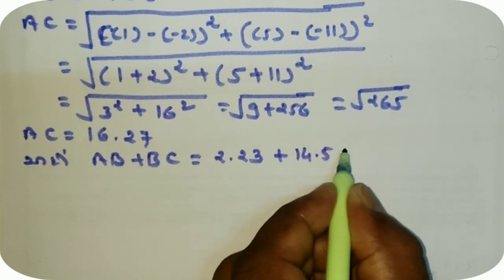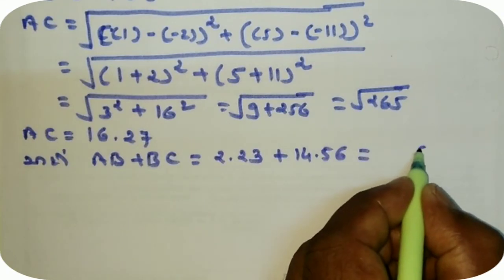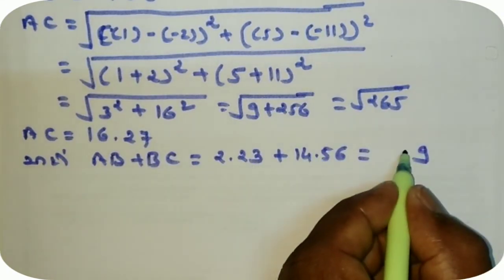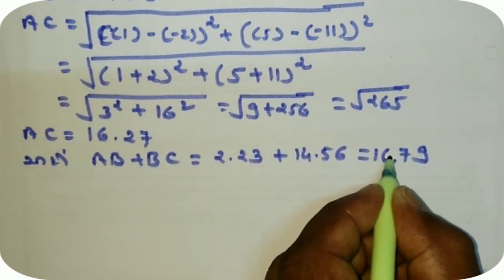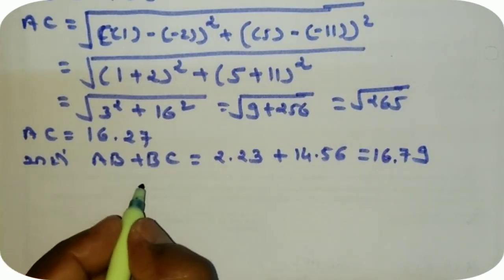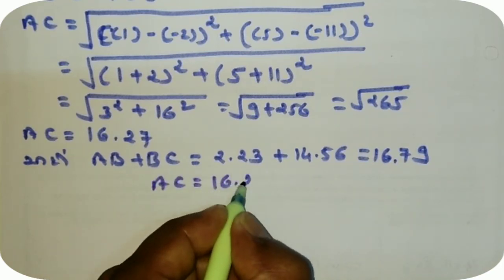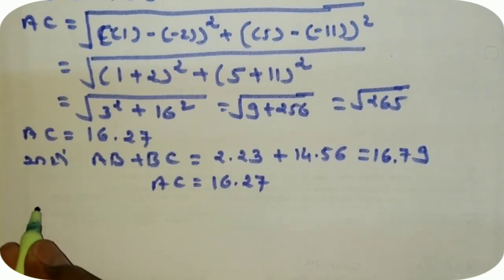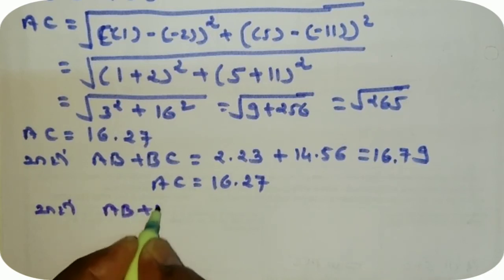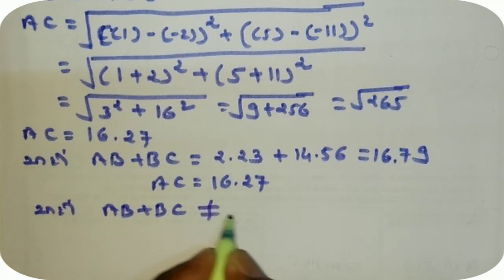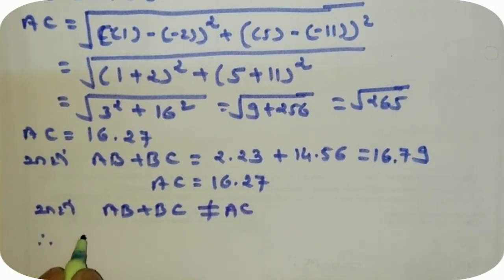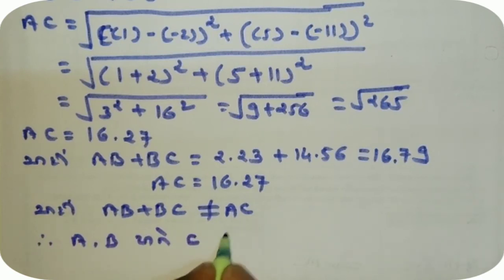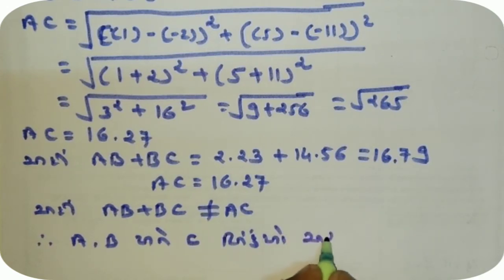BC ની કિંમત 14-point-7 — આ બંને નો સરવારો કરીએ. ને તો 4-point-અગ્ (4.7 something) — 4 point સત્ 7 — આ કેટ્લ આવે છે? 4 point 97 — અને આ as big side ना ≠ chetla, not equal to, માટે A, B, C બિંદુ ઓ સ-મ-રેક nathi.